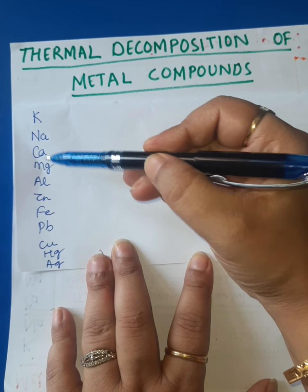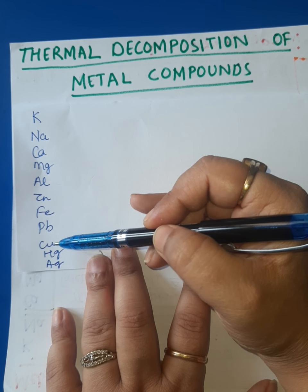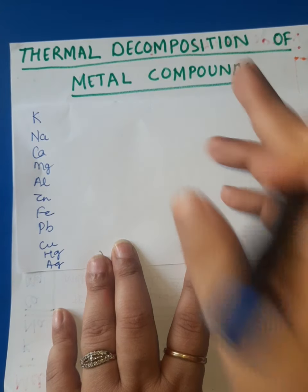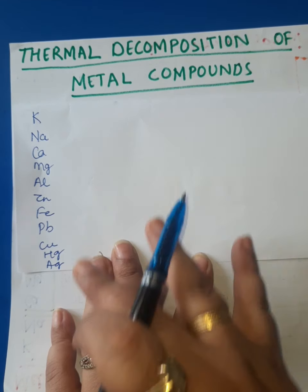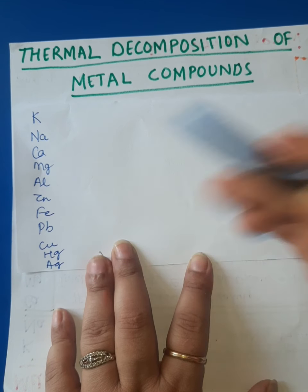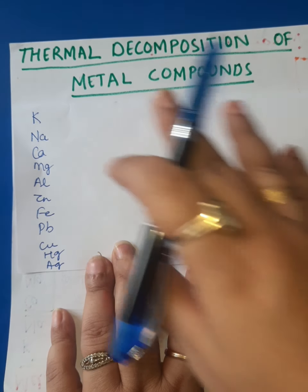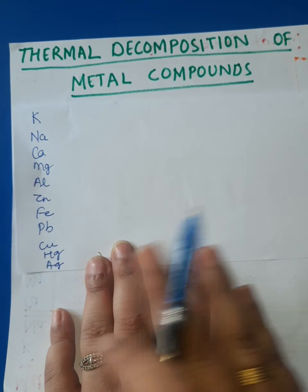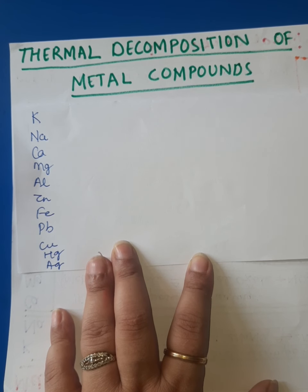The activity series starts with potassium, sodium, calcium, magnesium, aluminium, zinc, iron, lead, copper. After copper comes mercury, silver, gold and platinum. Since we are talking only about metal compounds, hydrogen is excluded. Gold and platinum are also excluded because they are so least reactive that their compounds are not easily formed, so there is no sense including them in thermal decomposition.